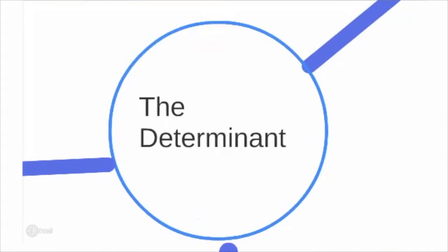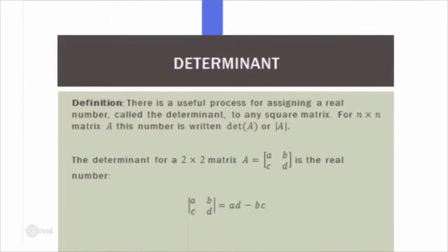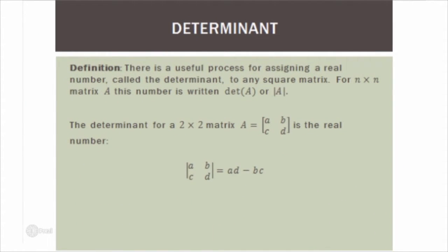Now moving on to the determinant. The determinant is a process for assigning a real number to any square matrix. For an n by n matrix A, this number is written det(A), or using absolute value notation. The determinant for a 2 by 2 matrix A with entries A, B, C, D equals the real number A times D minus B times C — you multiply the top-left and bottom-right entries, then subtract the product of the top-right and bottom-left entries.